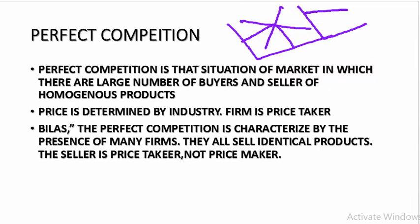You have to remember: perfect competition has large number of buyers and sellers, homogeneous product, and the price is determined by the industry. At the given price which is fixed by the industry, the firm is a price taker. The perfect competition is characterized by the presence of many firms; they all sell identical products — no differentiation, no close substitutes, only homogeneous product.